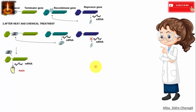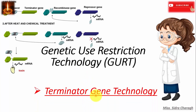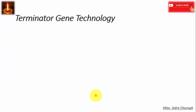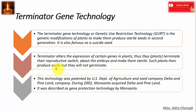We will discuss genetic use restriction technology, or terminator gene technology. In terminator gene technology, we do genetic modification of plants to make them produce sterile seeds in the second generation, and it is famously known as suicide seed. Terminator technology alters the expression of certain genes in the plant, thus the plant terminates its reproductive switch about the embryo and makes them sterile.